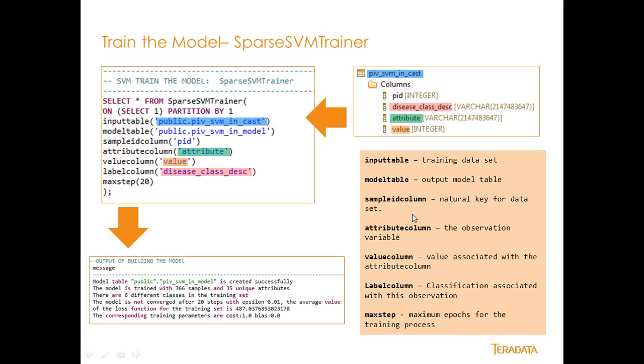The input table is our training data set. The data from this table right here. The model table is our output model table that we're going to generate. The model that we're going to generate. The sample ID column is the natural key for the data or the PID or the patient ID. The attribute column is the observation variable. And then the value column is the value associated with that variable. And then the label column is basically the disease that we're trying to use to predict or to train that prediction based on those variables. And the max step is the number of epochs or cycles that we're going to take for the training process overall.